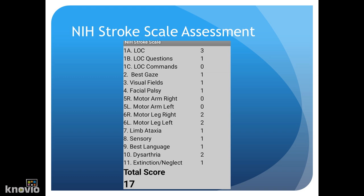Section 10 tests for dysarthria. If they can cooperate with this command, they'll receive zero points. The last section is testing for inattention, so no abnormality with this would be zero points.